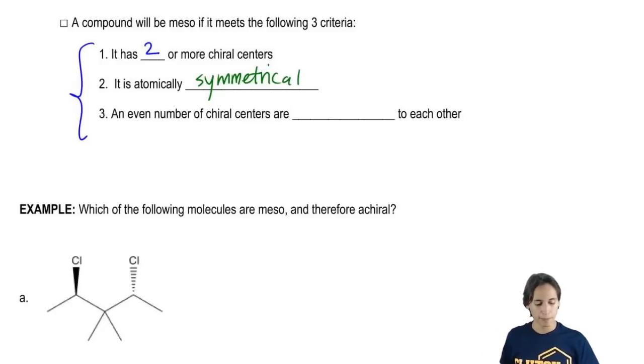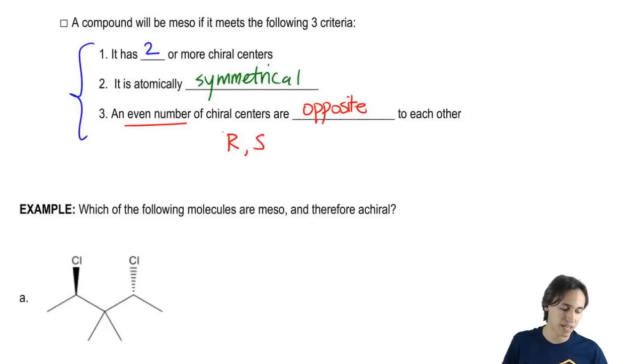And then finally, I need an even number of the chiral centers to be opposite to each other. So that means that if I have two chiral centers, I need two of them to be opposite to each other. That means I need my first one, if it's R, I need the other one to be S. If this first one is S, I need the other one to be R. Why is this?